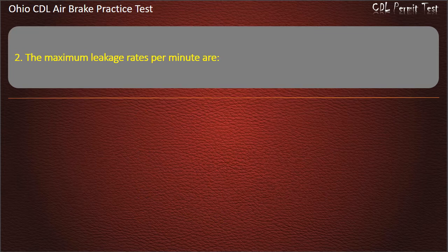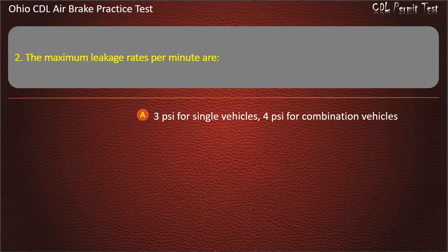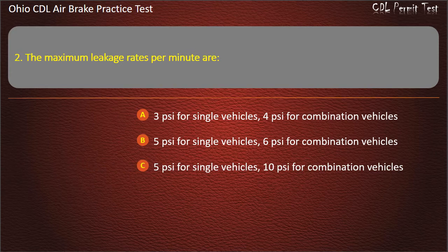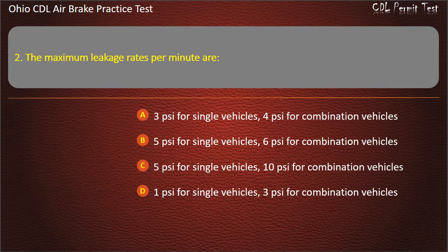Question 2: The maximum leakage rates per minute are: 3 pounds per square inch for single vehicles, 4 pounds per square inch for combination vehicles; 5 pounds per square inch for single vehicles, 6 pounds per square inch for combination vehicles; 5 pounds per square inch for single vehicles, 10 pounds per square inch for combination vehicles; 1 pound per square inch for single vehicles, 3 pounds per square inch for combination vehicles. Answer: 3 pounds per square inch for single vehicles, 4 pounds per square inch for combination vehicles.